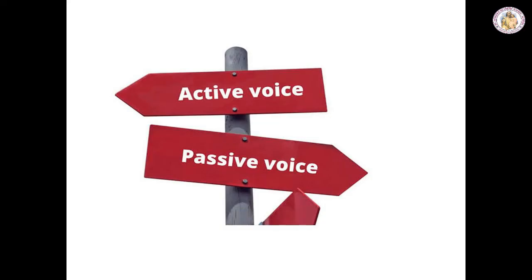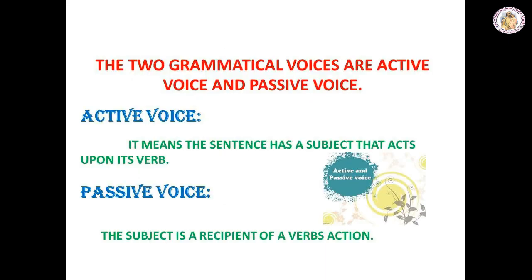Children, in this video session you are going to learn about the active and passive voice in English grammar. For sentences in the active voice, the subject performs the action, and in the passive voice, the subject receives the action. The two grammatical voices are active voice and passive voice. Active voice means that a sentence has a subject that acts upon its verb. Passive voice means that a subject is a recipient of a verb's action.